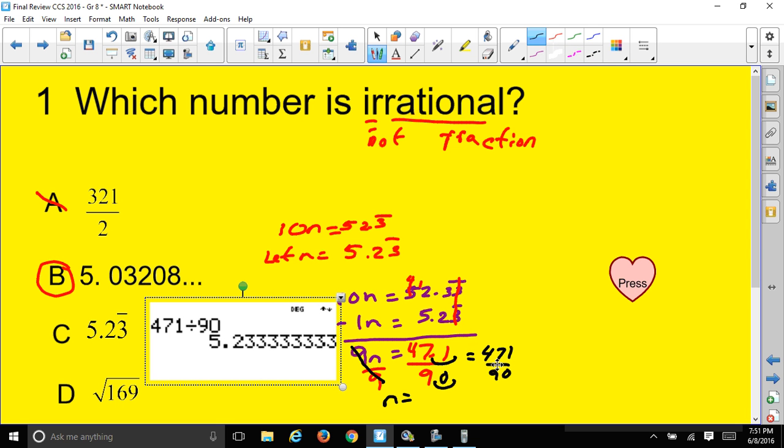So, this fraction, 471 over 90, is a fraction. And that is a rational number. So, this is a rational number. So, check out that video on how I changed repeating decimals to fractions. That's a good video also.